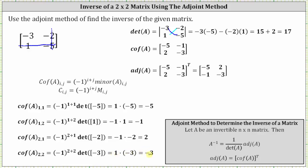Now that we have all four cofactors, we can form the cofactor matrix, where the first row is negative 5, negative 1 and the second row is 2, negative 3. To find the adjoint of A, which we need to find the inverse, we take the transpose of the cofactor matrix. We make column 1 of the cofactor matrix the first row of the transpose, and the second column of the cofactor matrix the second row of the transpose — giving us the adjoint of A.